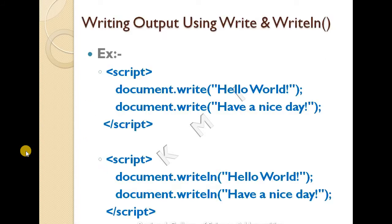Let's check an example. Using document.write, you can print: 'Hello, World. Have a nice day.' Using document.writeln, it is similar but adds a new line after each print. So writeln gives you a new line in the output. In this example, you can see the new line created by writeln.